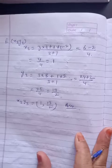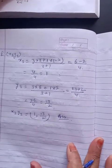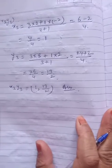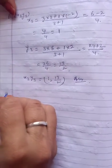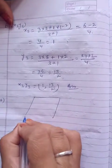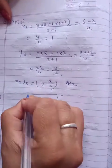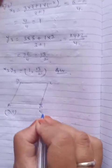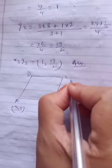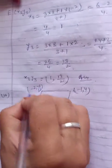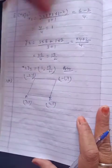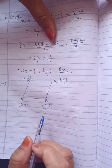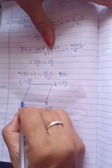Question number 10: Find the area of the rhombus if the vertices taken in order are given. Hint given है: area of rhombus = 1/2 × product of diagonals. मैंने rhombus draw कर लिया है - A, B, C, D. A के points: (3, 0); B के points: (4, 5); C के points: (-1, 4); and D के points: (-2, -1). हमें जो formula given है, उसी का use लेंगे।